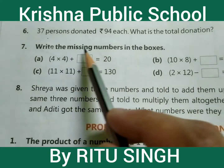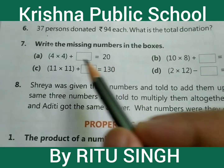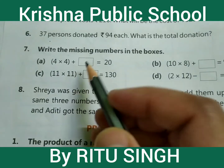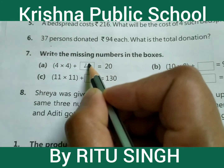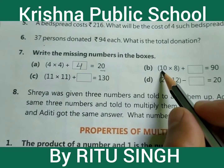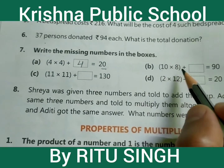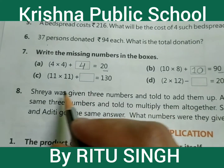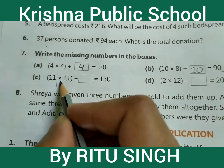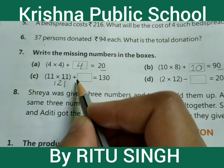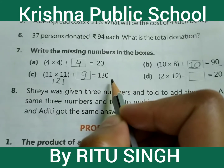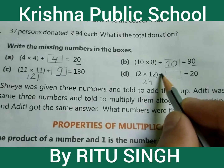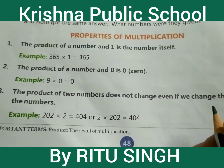Next question: write the missing number in the boxes. 4 into 4 is 16, add 4, your answer is 20. 10 into 8 is 80, add 10, your answer is 90. 11 into 11 is 121, add 9, your answer is 130. Next: 2 into 12 is 24, subtract 4, your answer is 20.